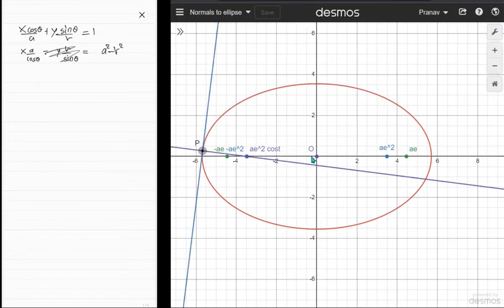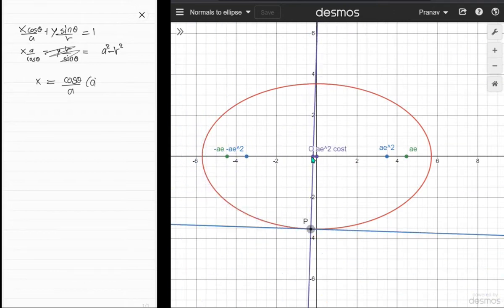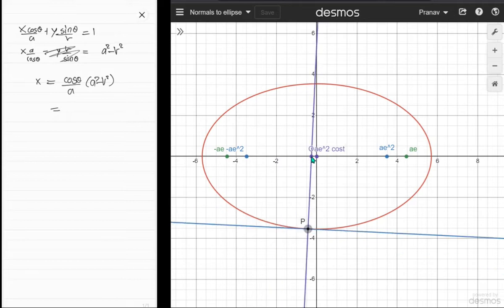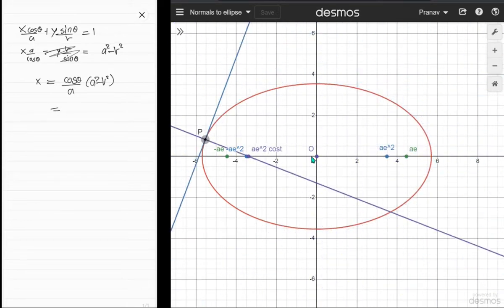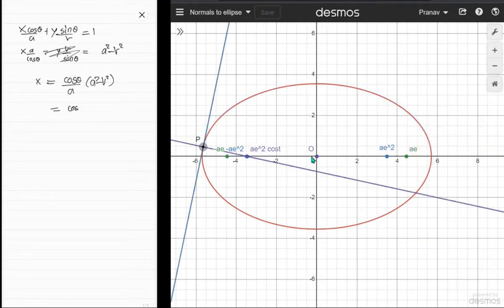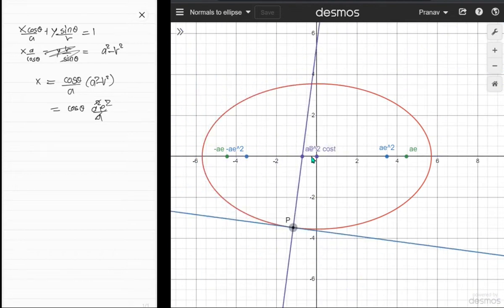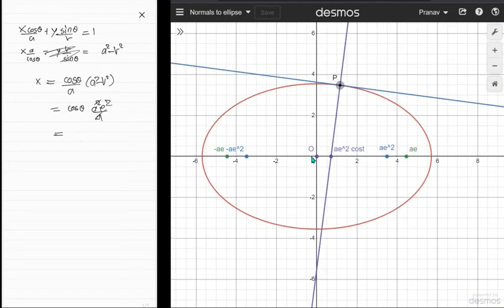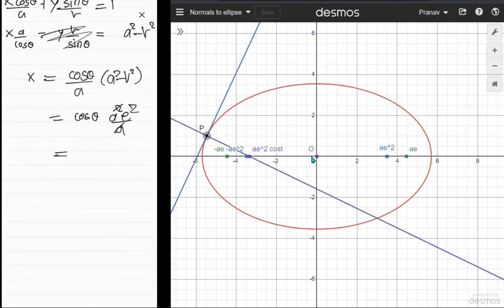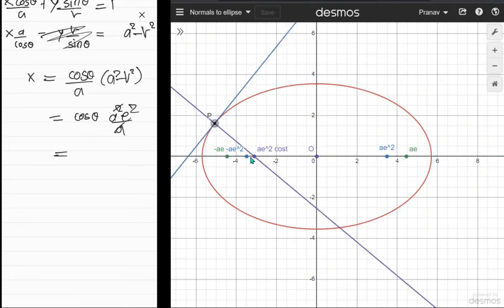zero, so this term is gone, and that means the x-intercept is just (cos θ)/a times (a² - b²). Now I'll use the fact that a² - b² is just a²e², or I should say (ae)². So this is just (cos θ)(a²e²)/a, which means it's ae² cos θ. You can see this looks like